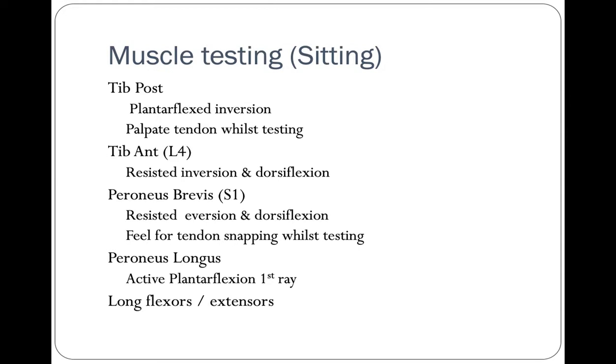The anterior tibial tendon is the main dorsiflexor of the ankle. Perform a resisted dorsiflexion of the ankle and palpate the tendon. There are sometimes ruptures of this tendon or weakness of the muscle group in the anterior compartment.